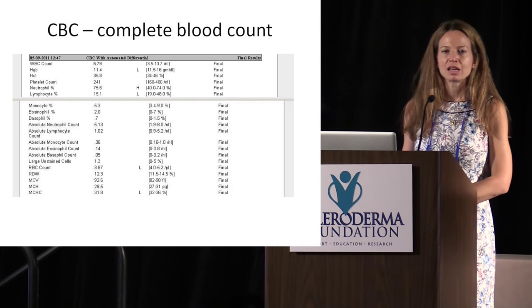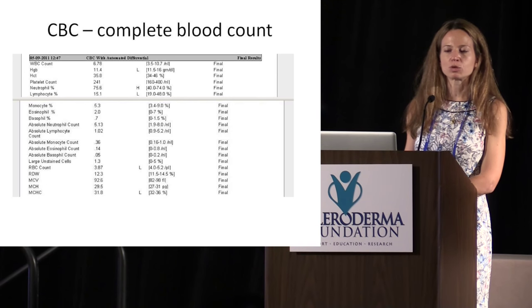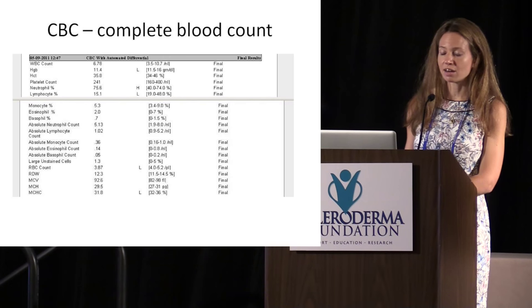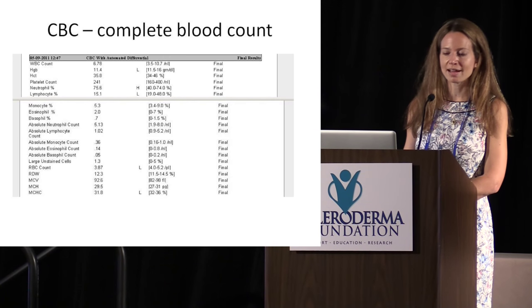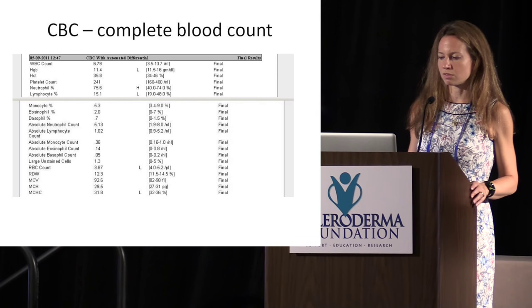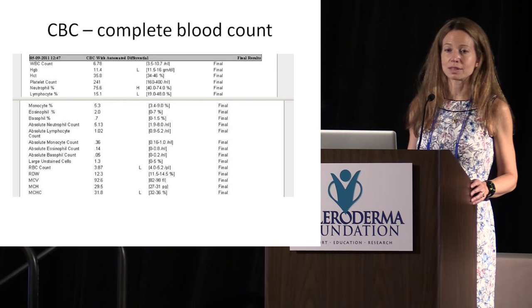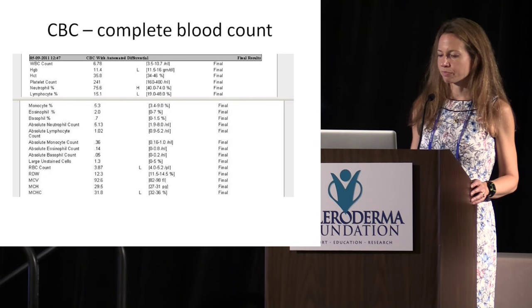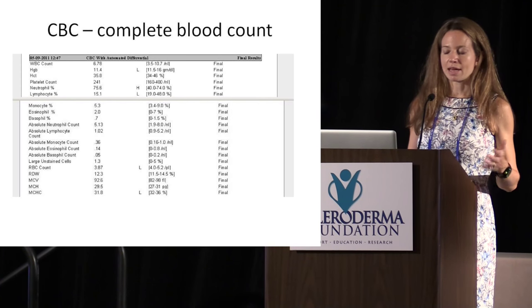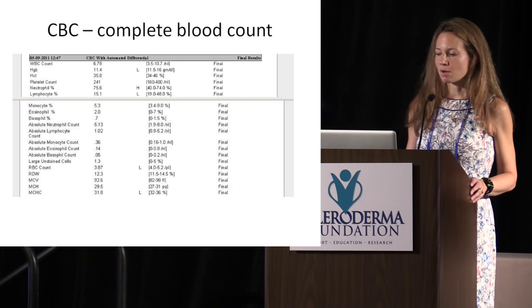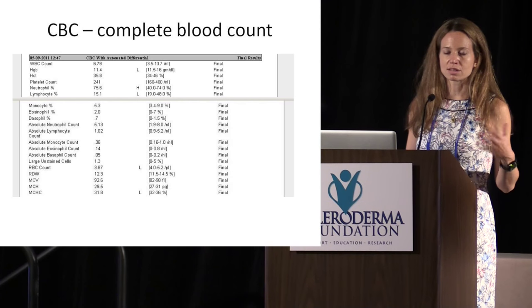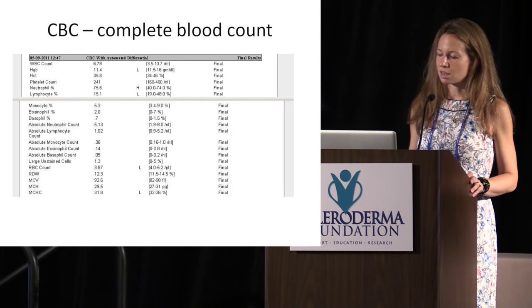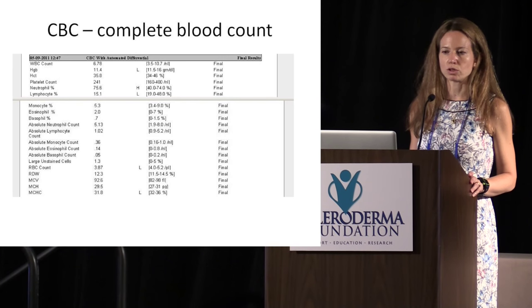The white blood cell count, for example — if it's very low, the patient would be more at risk for infections because that's part of the immune system functioning. If it's higher than normal, there are many explanations. White blood cell counts go up on prednisone, they go up if you have an infection. We also monitor them in terms of medication — some of the immunosuppressive medicines we use can suppress all the cells in the complete blood count: white blood cells, hemoglobin, or platelets. These are things we have to monitor pretty regularly when using medications.